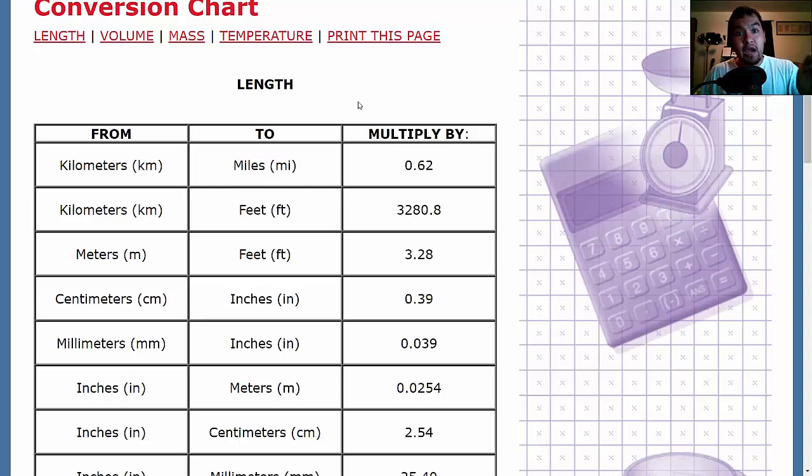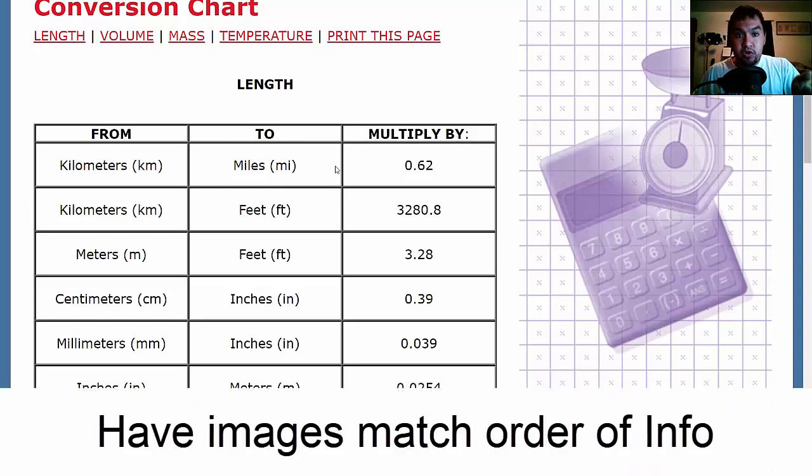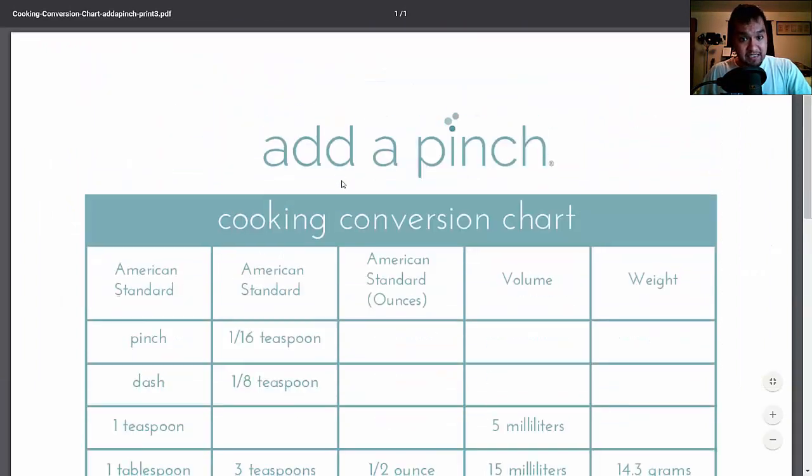Now I would go from left to right because you just have to keep in mind from to multiply by. Now as long as you keep your story in this order with your images that you're using, you'll be just fine because you might have some conversions that are a little bit more complicated like this.